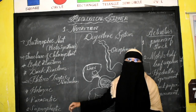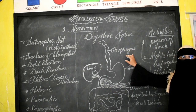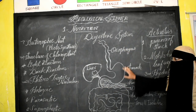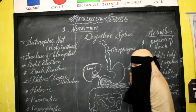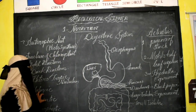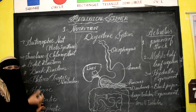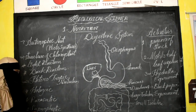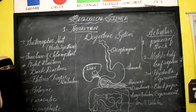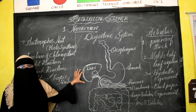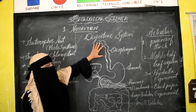Now the next topic is the digestive system. You need to be aware of all parts and what enzymes are released — this is very, very important. Holozoic means digestion takes place inside the body; parasitic means the organism takes food from other organisms; saprophytic means digestion takes place outside the organism's body. The digestive system starts from the buccal cavity, then the pharynx, esophagus, and the stomach.